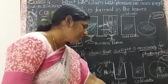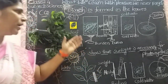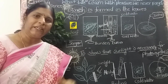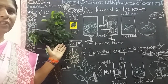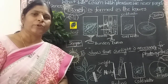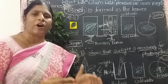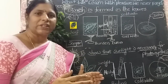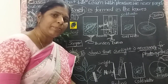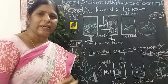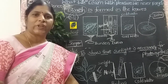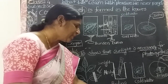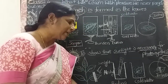Which food items contain starch? All green leaves contain starch. Plants store extra food in the form of starch. Starch is present in food grains like rice, wheat, maize, and some fruits. Also in sugar, bread, and potato. These are food items rich in starch. I will show you one experiment.